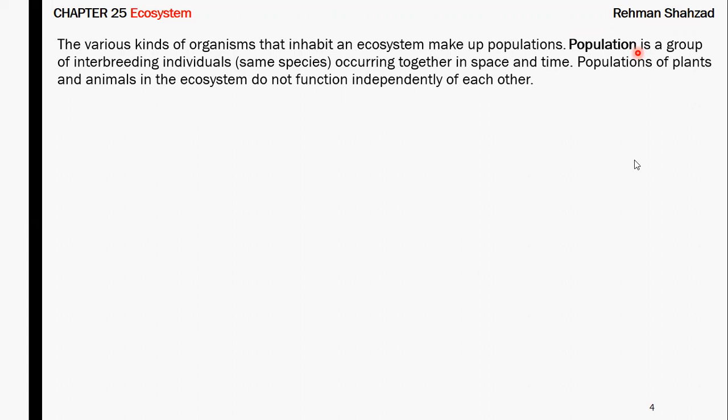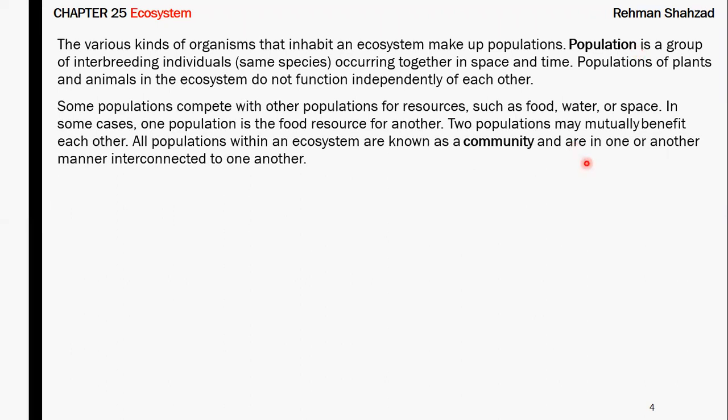These populations are involved in exchanging nutrients with each other. Within any ecosystem, populations also exist in competition — competition for food, water, and space. Furthermore, one population serves as a source of food for another population. A common example is the cheetah and goat, or lion and deer — the lion always uses the deer as its food source.